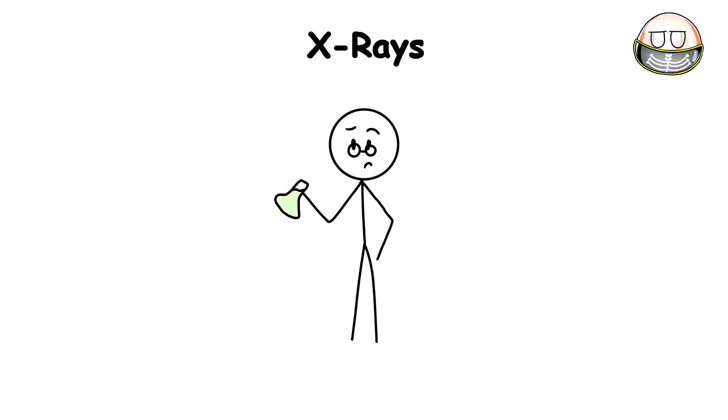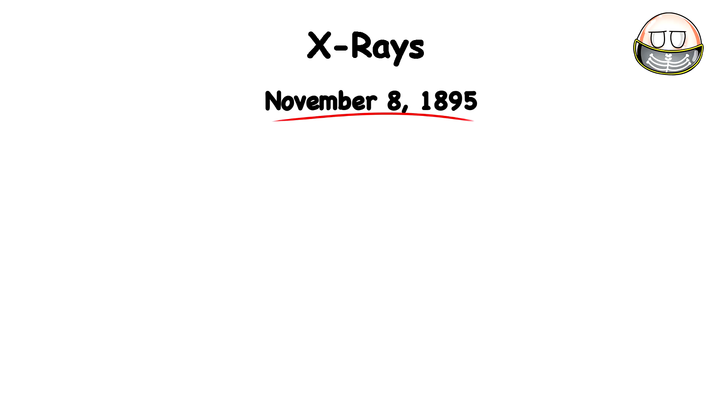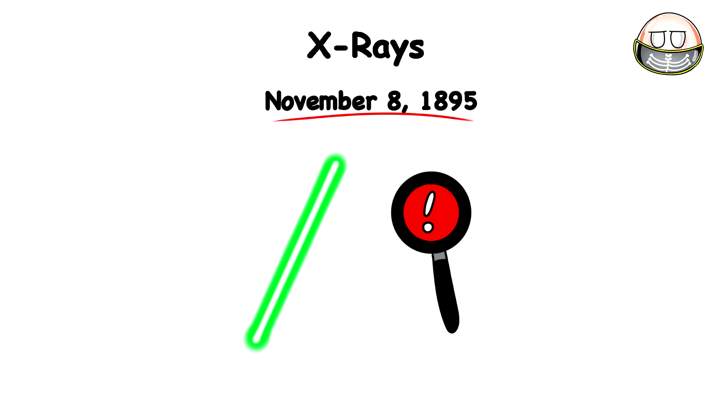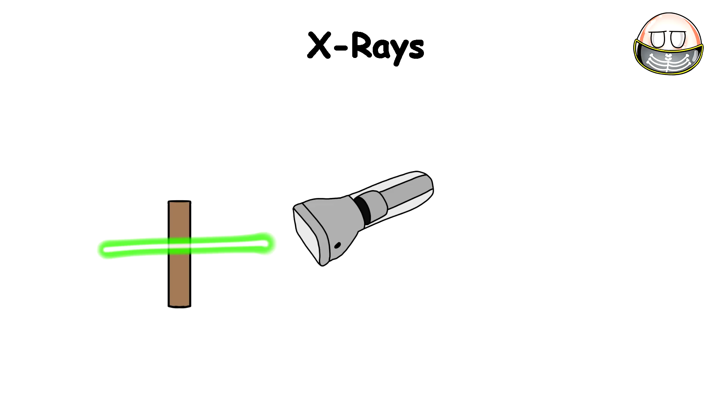X-rays. While experimenting with cathode ray tubes in his lab, physics professor Wilhelm Röntgen made an accidental observation. On November 8th, 1895, Röntgen detected a fluorescent glow from a nearby chemically coated screen. It seemed the cathode rays were generating a never-before-seen type of ray that could pass through the cardboard covering the tube.